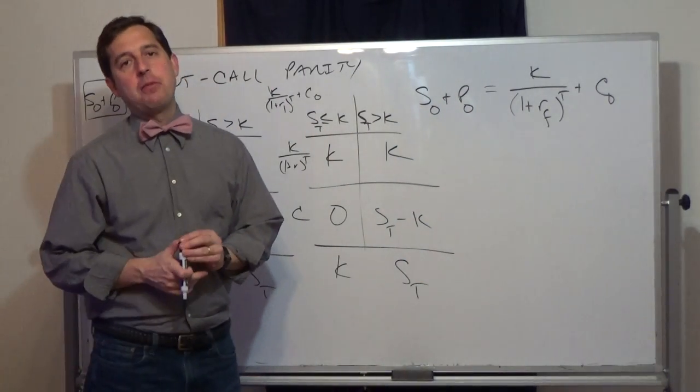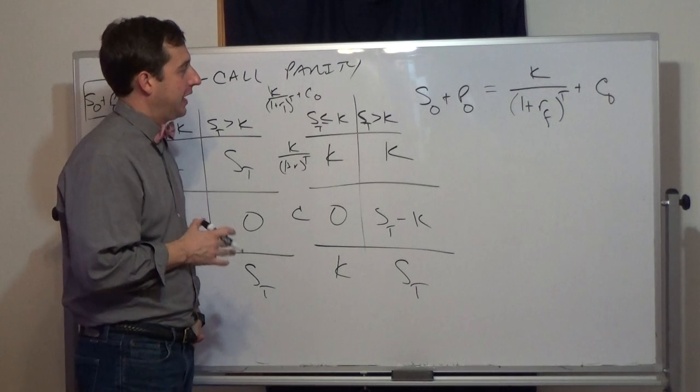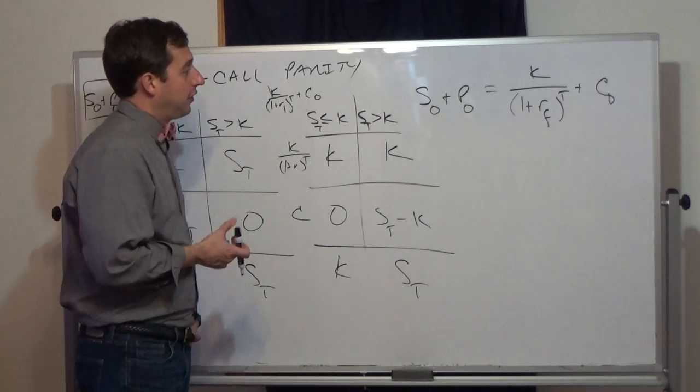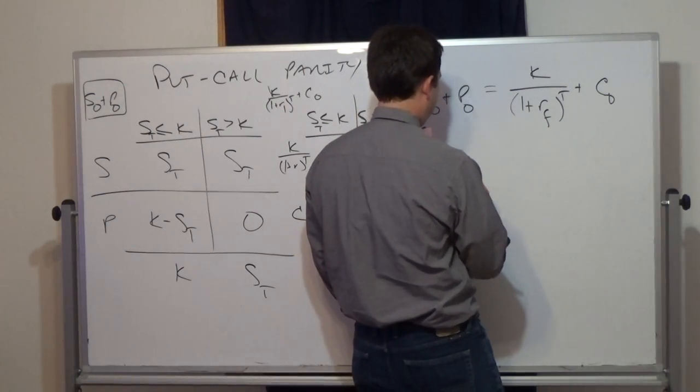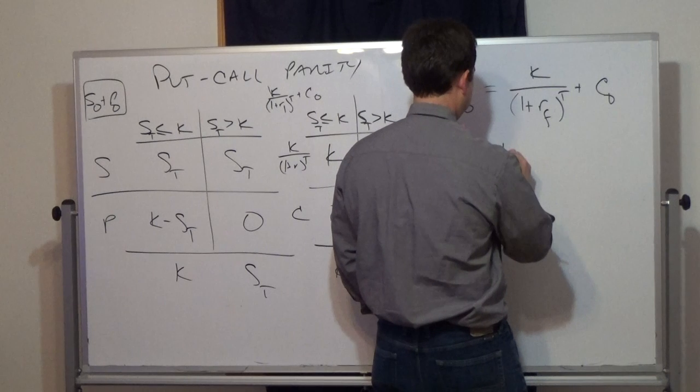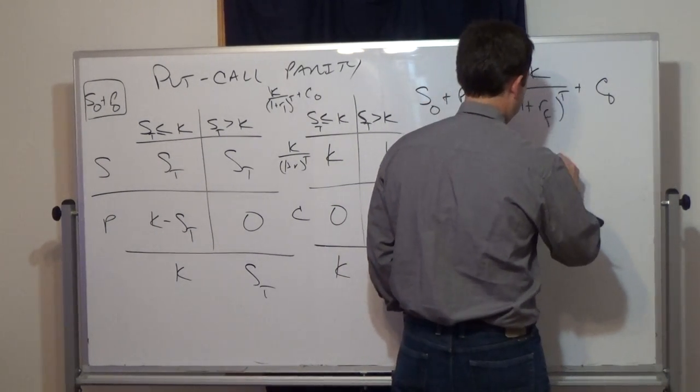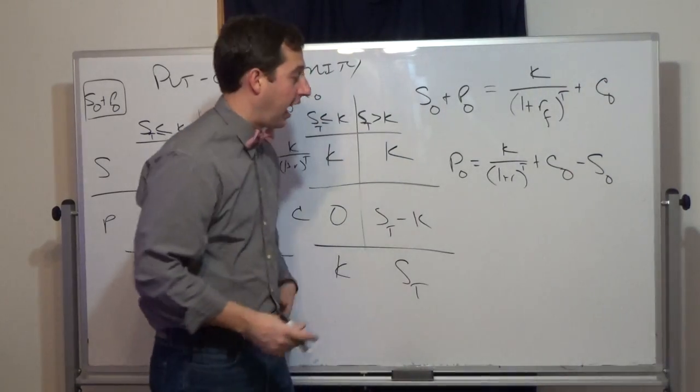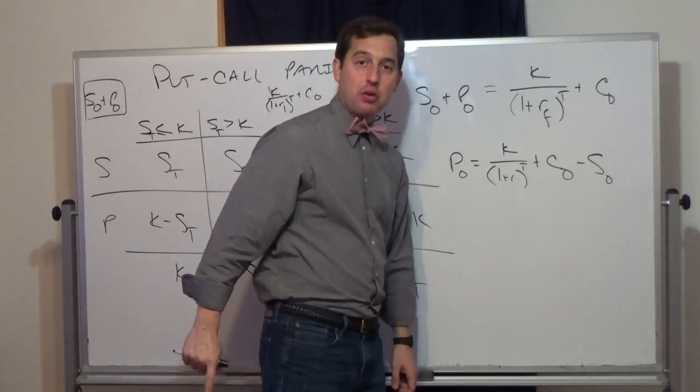What does this mean? What is the implication of put-call parity? One of the really important implications of put-call parity is to show you what banks do. The idea here is if you want a put, I can create a put by trading in a bond, a stock, a bond, a call, and a stock. And I can create this portfolio which is perfectly equivalent to a put.